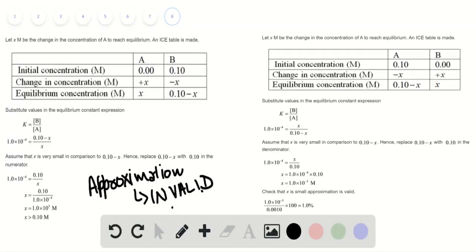Same with option C. Let x be the change in concentration of A to reach the equilibrium. We substitute the values into the equilibrium constant expression.